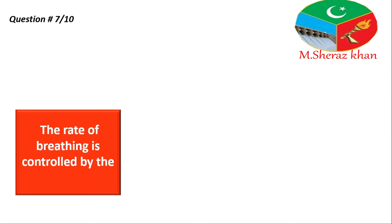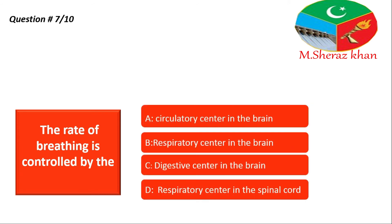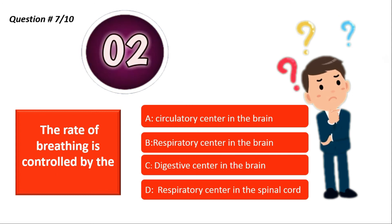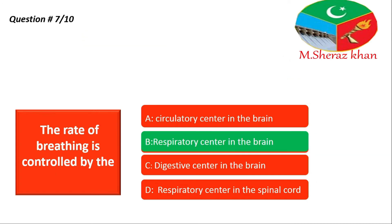Question number seven: the rate of breathing is controlled by — ke jo rate of breathing hai, kya cheez control karti hai? Four options: A — circulatory center in the brain, B — respiratory center in the brain, C — digestive center in the brain, D — respiratory center in the spinal cord. I give you 10 seconds, then I tell you the right answer.